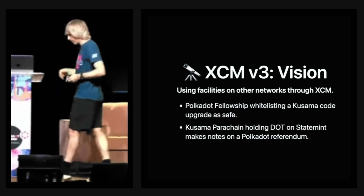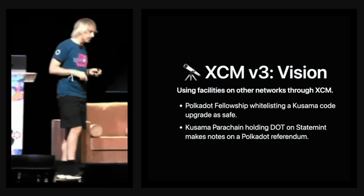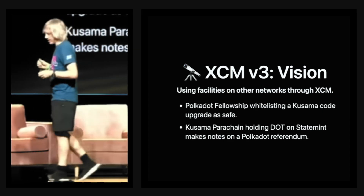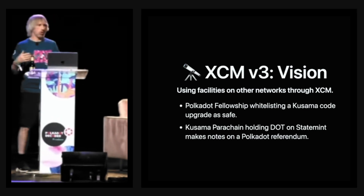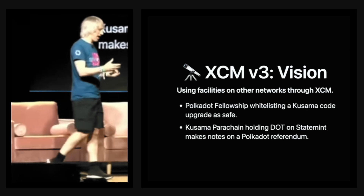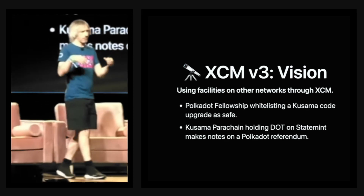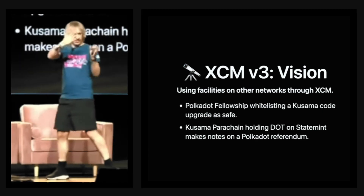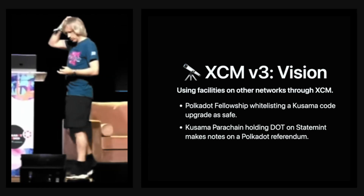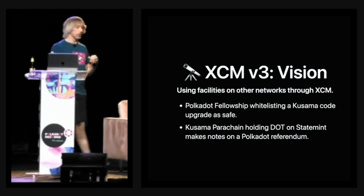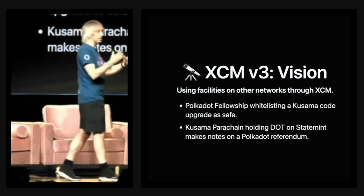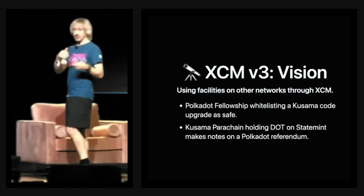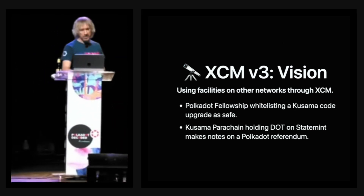Next, he reveals a new component of the upcoming governance overhaul: the Polkadot Fellowship. It exists as an on-chain membership organization that helps oracalize information regarding the safety and time-criticality of on-chain upgrades — essentially an expert oracle. There's no real reason to have two different expert oracles, one for Polkadot and one for Kusama, given they both use the Polkadot protocol. XCM v3 is intended to allow this oracle functionality to be shared across both networks without duplicating efforts.